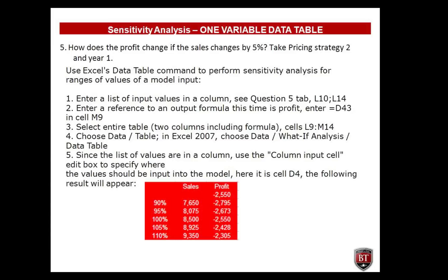To set up the data table: step one — enter a list of input values in a column (cells L10 to L14 in the question five tab of the solution file). Step two — enter a reference to the output formula, which here is profit; enter =D43 in cell M9. Step three — select the entire table including both columns and the formula (cells L9 to M14). Step four — choose Data Table. In Excel 2007, choose Data > What-If Analysis > Data Table. Since the values are in a column, use the column input cell box to specify where values should be input into the model — here it is cell D4. The resulting table will appear, shown in red on screen.